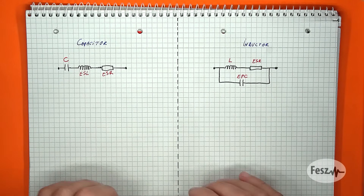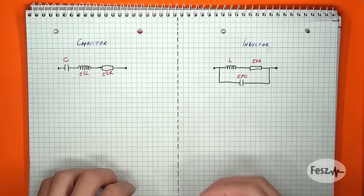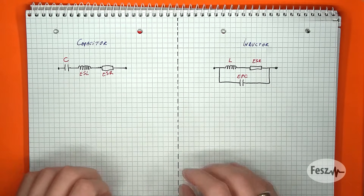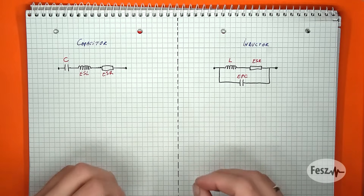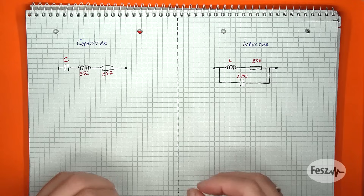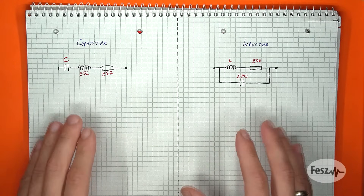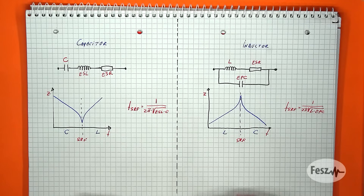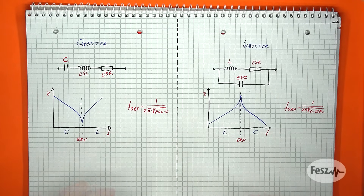The reason why these are called equivalent components is because they are not added into the construction of the inductor or capacitor as discrete components, but rather they represent various phenomena and unintended behaviors. Regardless, these need to be taken into account to understand the real behavior observed with these components. Because we have both types of reactive elements, this leads us to a resonance event.